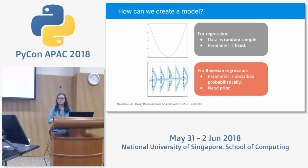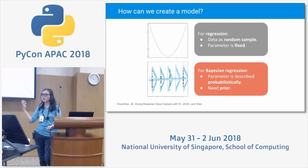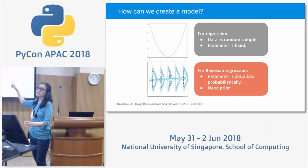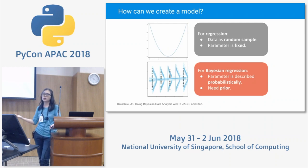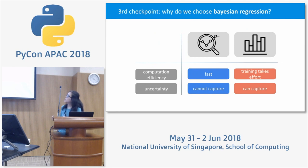So we use Bayesian regression. Instead of treating parameters as fixed, we treat them as probabilistic — we need a prior, but it's worth the effort. You get many possible lines instead of one, capturing the potential uncertainty that exists in the real world. That's why we use Bayesian regression for the environment.